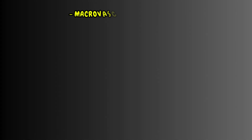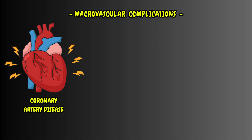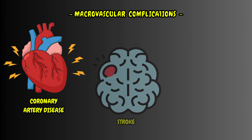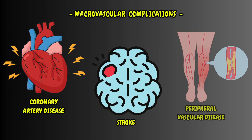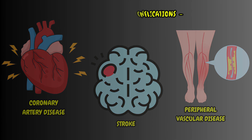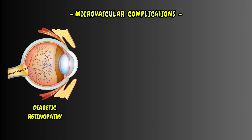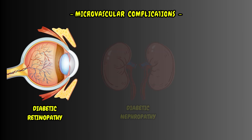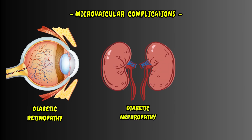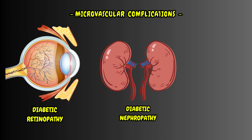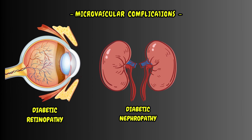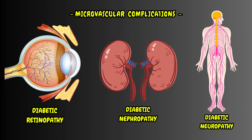Some of the macrovascular complications include coronary artery disease, stroke, and peripheral vascular disease. Some of the microvascular complications include diabetic retinopathy, which can lead to blindness, diabetic nephropathy, which is the leading cause of chronic kidney disease, and diabetic neuropathy.